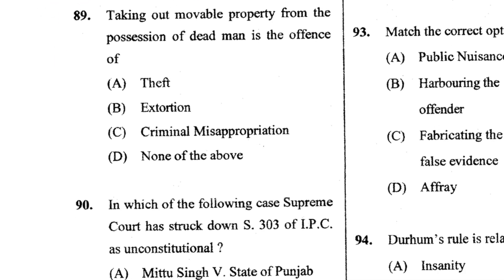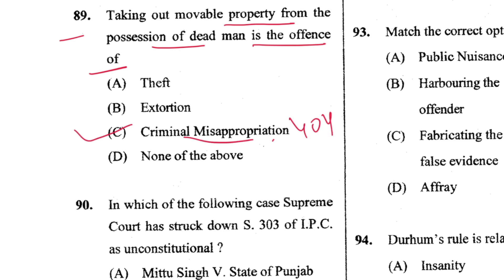Question 89: Taking out movable property from the possession of a dead man is the offence of criminal misappropriation, mentioned in Section 404. C is the answer. Theft is defined in Section 378; extortion in Section 383.